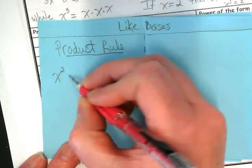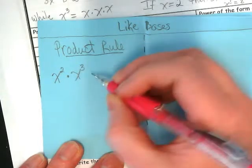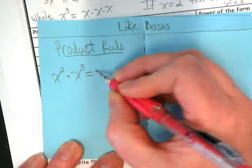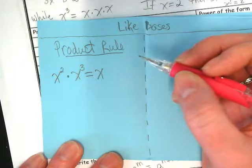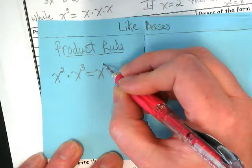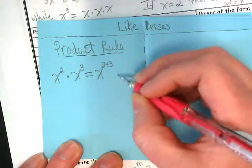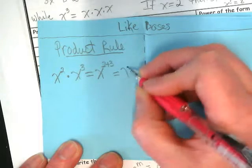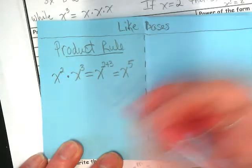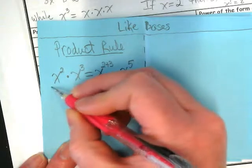If I have x squared times x to the third, what was our rule that we discovered yesterday? We're going to take x squared and x to the third, and add those. Our answer ends up being x to the fifth power. So the product rule, quite simply, if you have the same base, add the exponents.